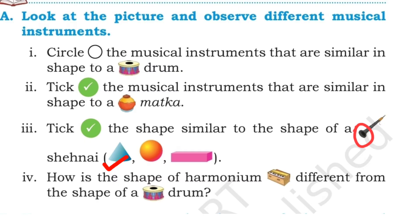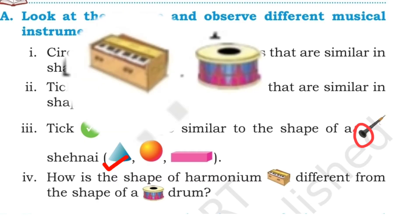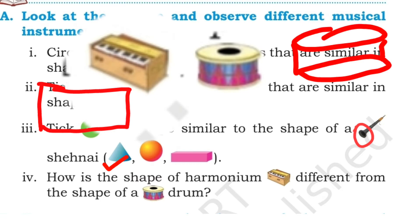Last one: how is the shape of a harmonium different from the shape of a drum? Look at the picture of harmonium and drum. Harmonium is in a rectangular shape, but the drum is in a cylinder shape. So both are having different shapes.